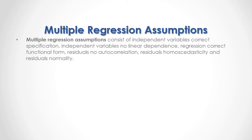Multiple regression assumptions consist of: independent variables correct specification, independent variables no linear dependence, regression correct functional form, residuals no autocorrelation, residuals homoscedasticity, and residuals normality.